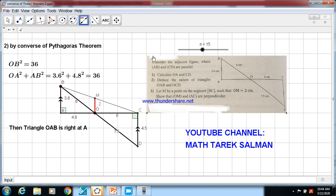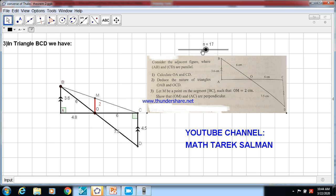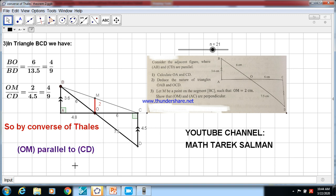To do that, I want to prove OM and CD are parallel. So to prove that, we use Converse of Thales' theorem in the triangle BCD. BO over BD, BO is equal to 6 over BD is 6 plus 7.5 equals 13.5. The ratio is equal to 4 over 9. Let me take OM over CD. OM over CD equals 2 over 4.5, also equals 4 over 9. So we check that the two ratios are equal. So by Converse of Thales' theorem, OM and CD are parallel.